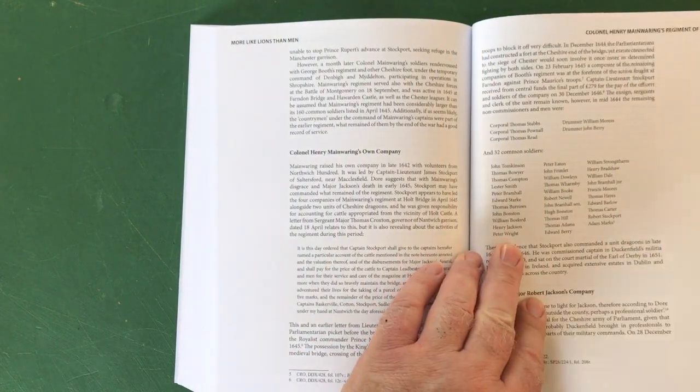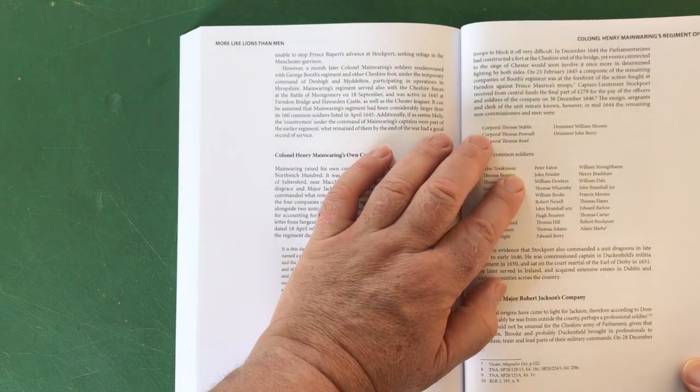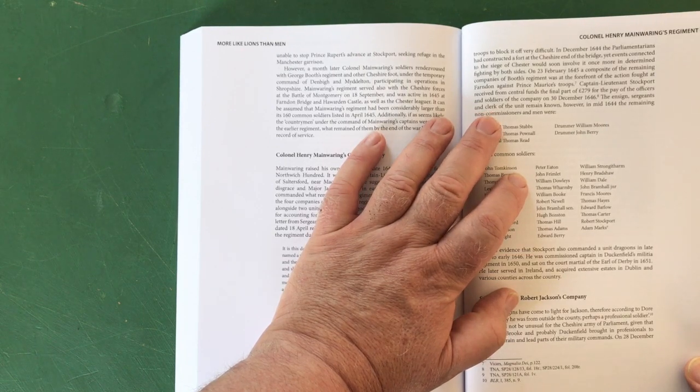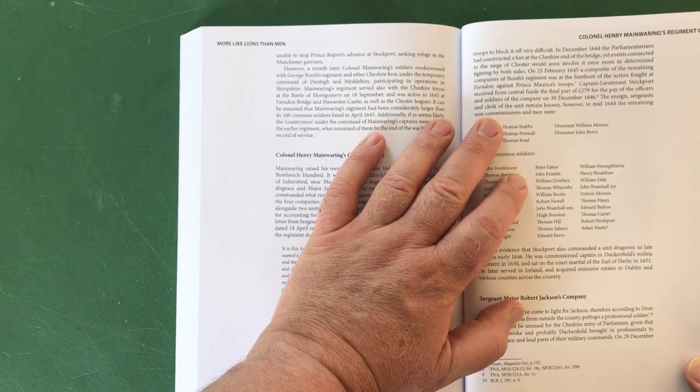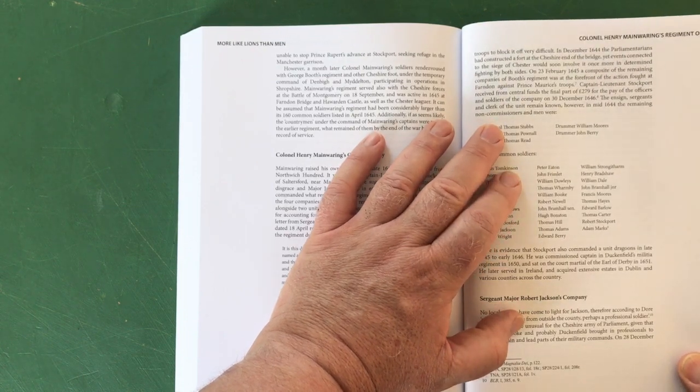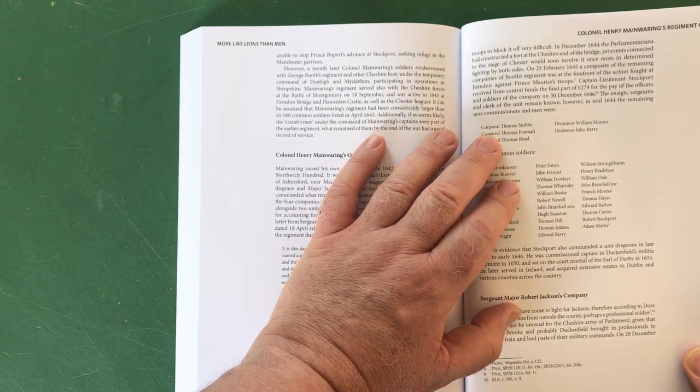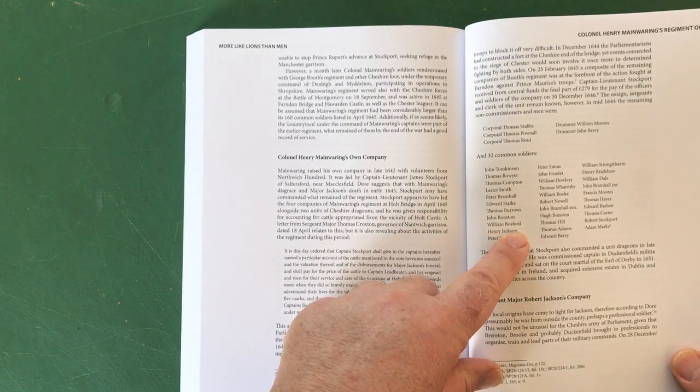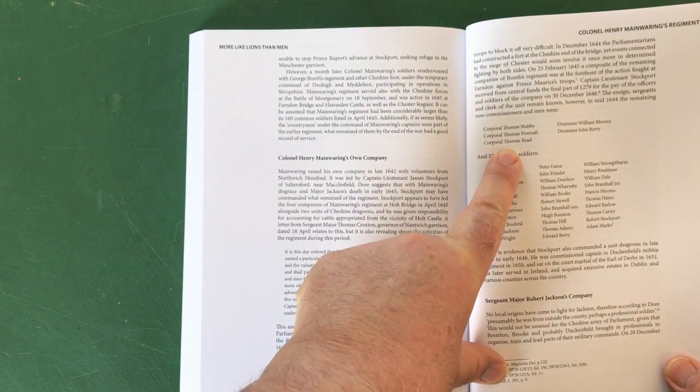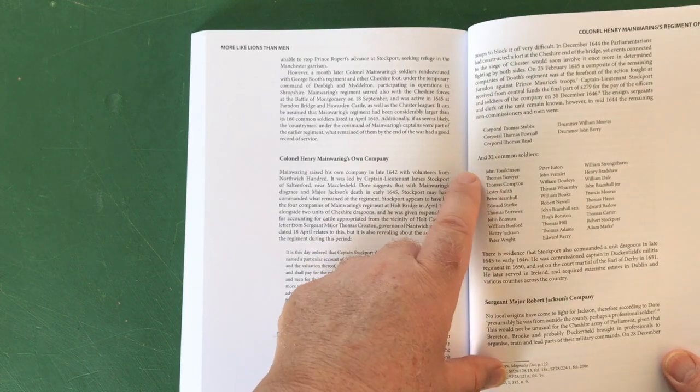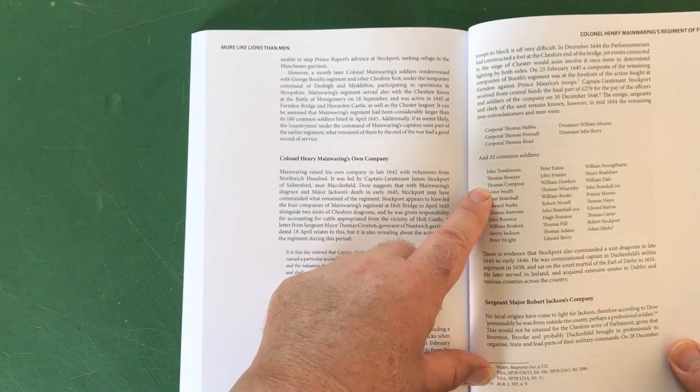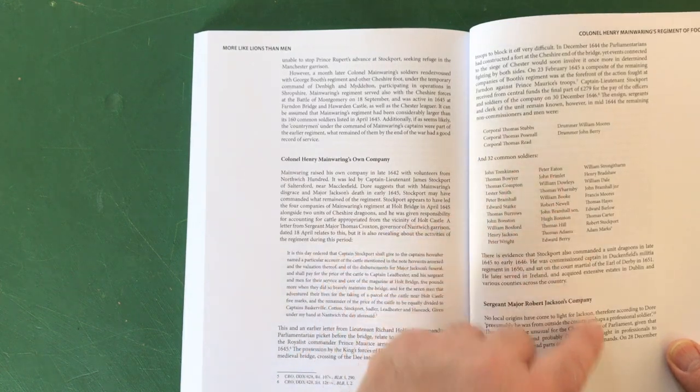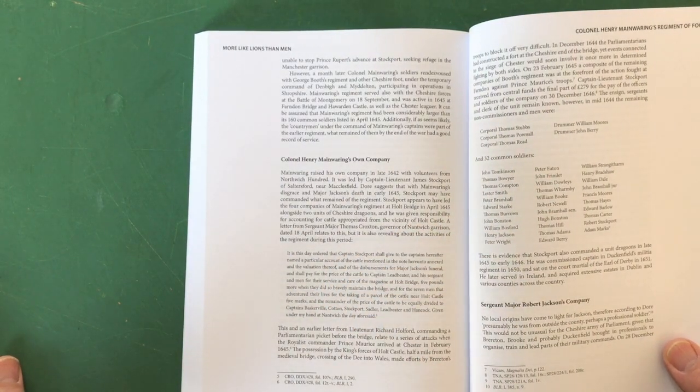Colonel Henry Mannering's Regiment of Foot. Here's a list - there we go, yeah. There's a list of the actual soldiers. The ensign, sergeants and clerk of the unit remain known, however in mid-1644 the remaining non-commissioned officers and men were - and they're named: Corporal Thomas Stubbs, Corporal Thomas Pound - lots of Thomases at this time you notice this - Corporal Thomas Reed, Drummer William Moores, Drummer John Berry, John Tomkinson, Thomas Bowyer, Thomas Compton, Lester Smith, Peter Bramhall, Edward Stark, Thomas Barrows and so on and so on and so forth. What a fantastic resource.